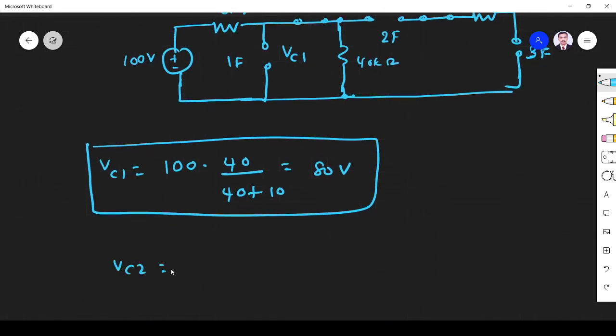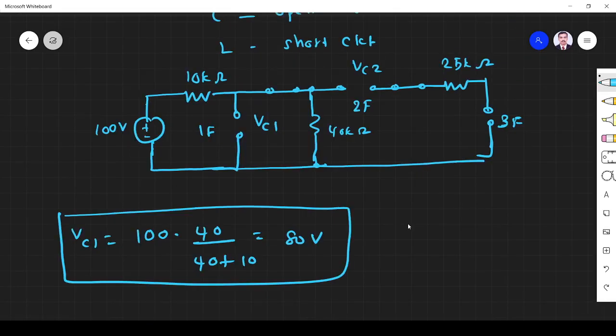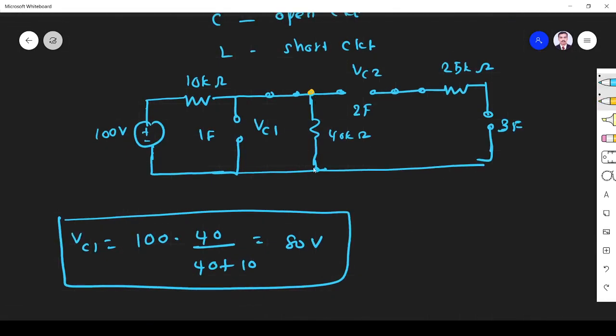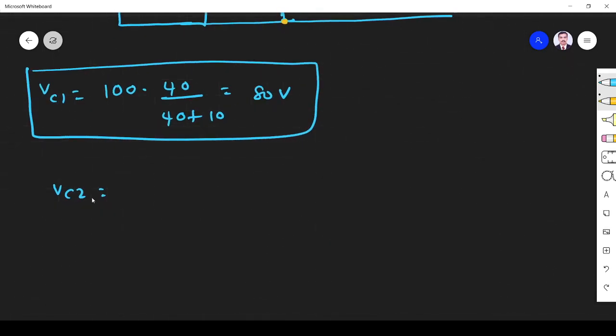VC2, VC2, so if I want to find VC2, so here I got it is 80 volt across this. I have 80 volt, so I want to find VC2 and this one is VC3. So the circuit will be like this. If I want to find, I consider this is 80 volt. Here it is VC2, 25k, it is VC3.